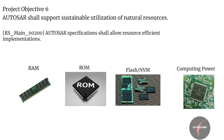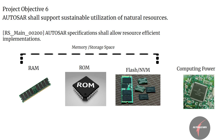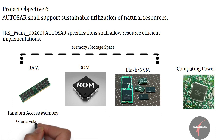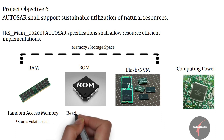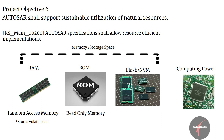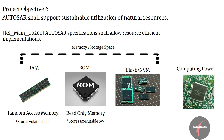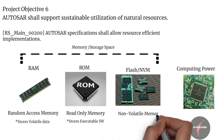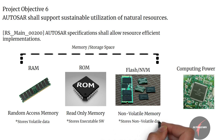RAM, ROM, and Flash refer to the memory or storage space of a microcontroller. RAM stands for Random Access Memory, used to store volatile data which is not meant to carry on to the next power-on cycle. ROM stands for Read-Only Memory, used to store the code or executable of the software. Flash, also called NVM, is used to store data which has to be accessed not just in the current power-on but in subsequent power-ons.